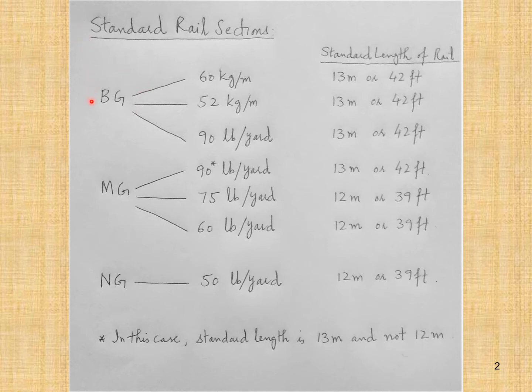For broad gauge, we have 60 kg/m, 52 kg/m, and 90 lb/yard sections. The standard length of the rail is 30 meters or 42 feet. For meter gauge, we have three options: 90 lb/yard, 75 lb/yard, and 60 lb/yard. For the first case, the standard length is 30 meters or 42 feet, and for the other two cases it is 12 meters or 39 feet.